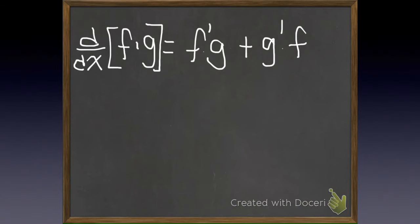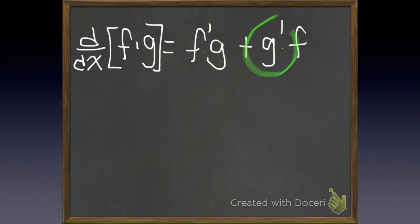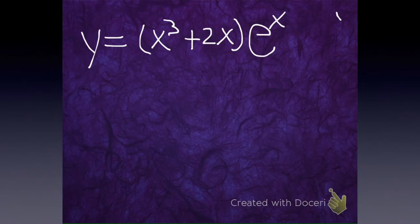The product rule! It's the derivative of the first times the second, plus the derivative of the second times the first. So what first must we do? We need to identify our two functions.